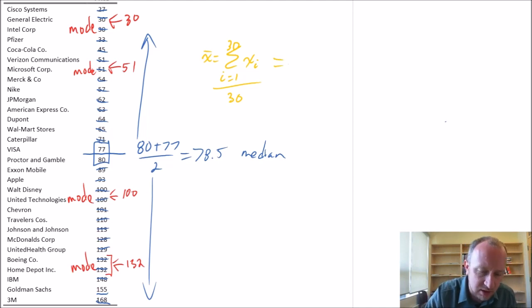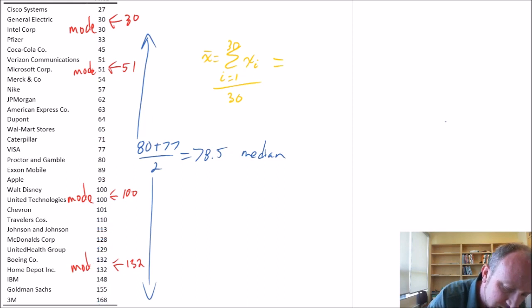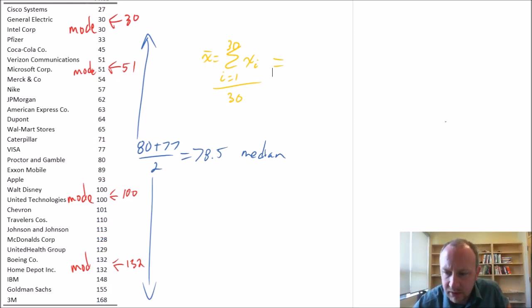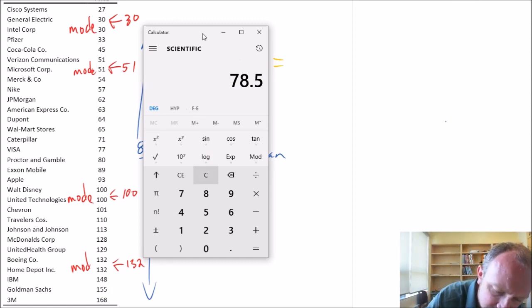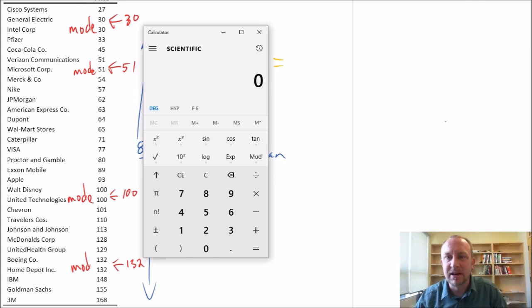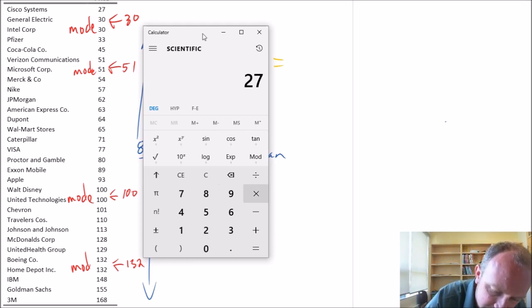I'm going to erase all of my blue lines so I can see my observations better. Now I need my calculator. Let's go through this calculation. It might take a few seconds—you're welcome to fast forward. I'm just going to punch in each of these numbers, add them together, and divide by 30.